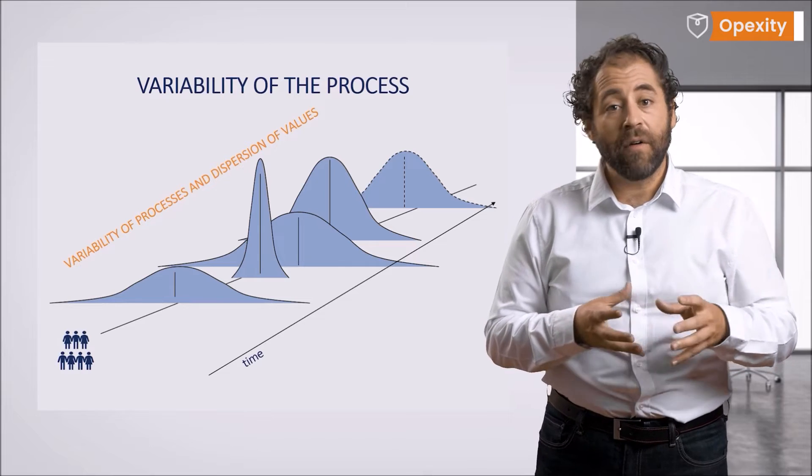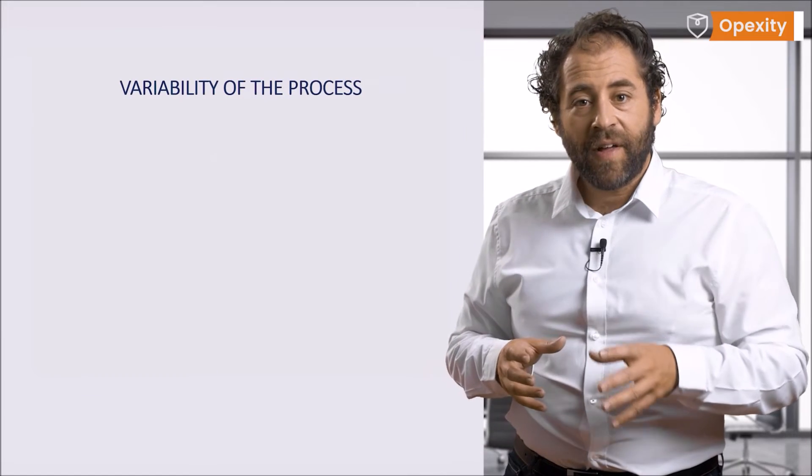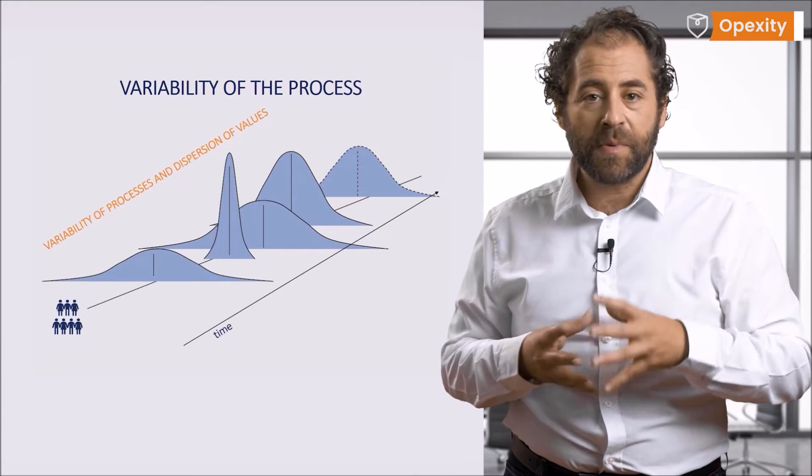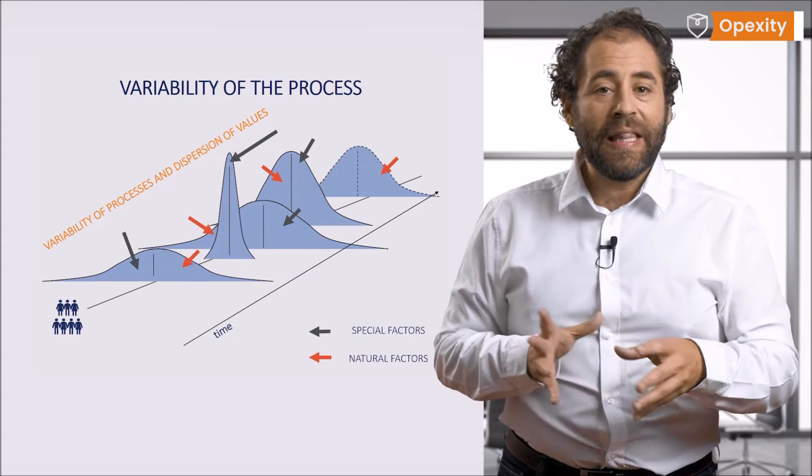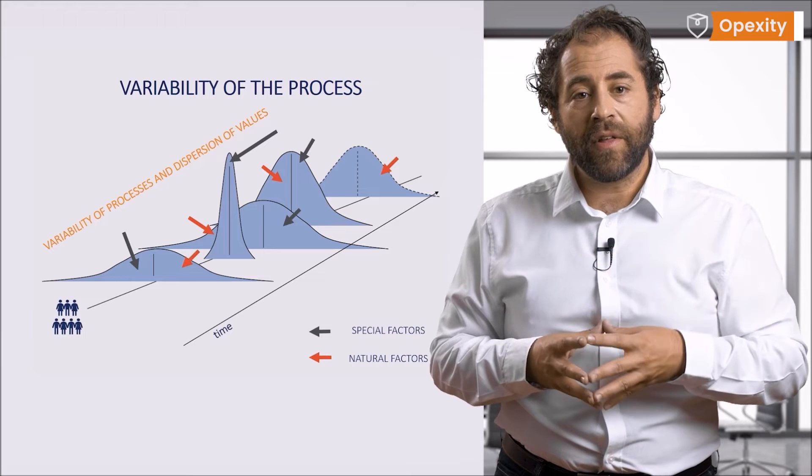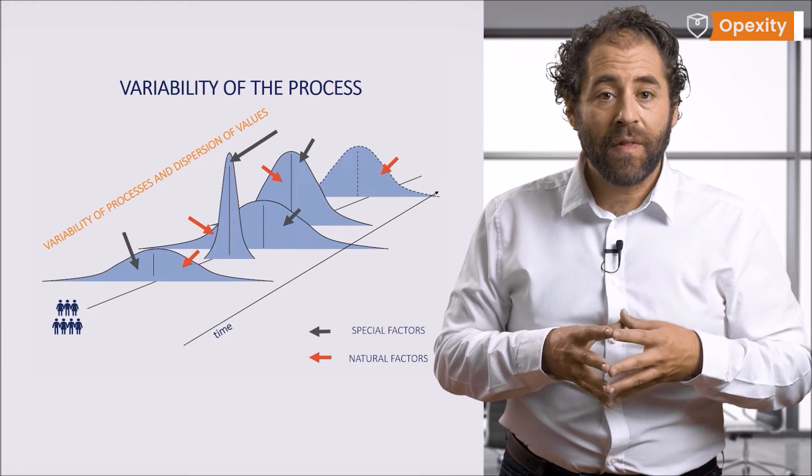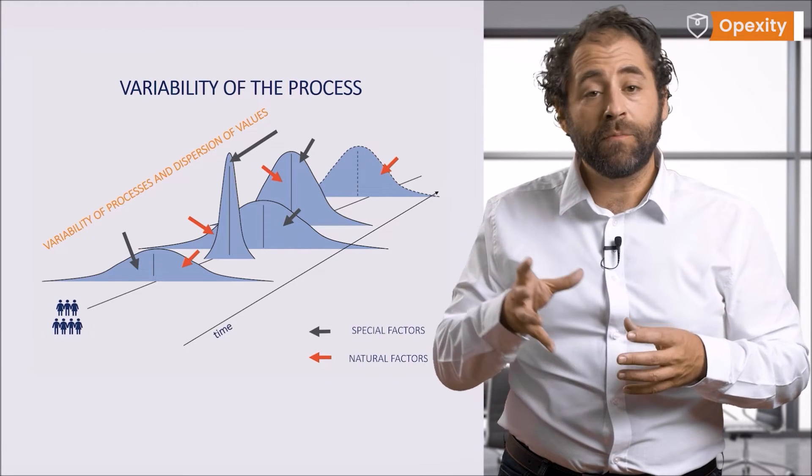This is caused by various factors. These factors can be divided into two types, special factors and natural factors. They lead to changes in the observed values in the process and are the cause of dispersion of parameters.